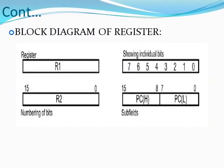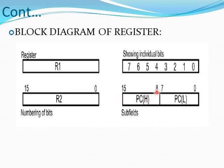The block diagram of a register shows two registers: R1 register and R2 register. R1 contains 8 bits (bits 0 to 7) and R2 contains 16 bits (bits 0 to 15). Bits 0 to 7 are called lower order bits, shown as PCL (program counter lower). Bits 8 to 15 are called higher order bits, shown as PCH in the diagram.